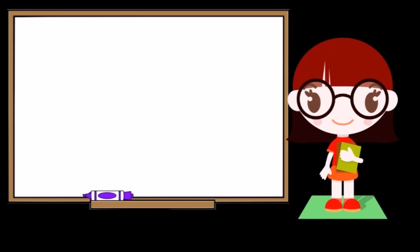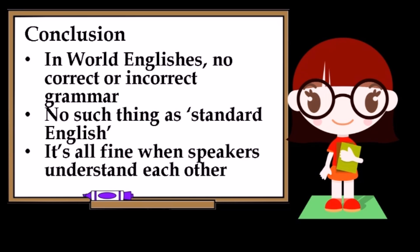All in all, in sociolinguistics, specifically World Englishes, there are no correct or incorrect English, nor is there a standard English. What matters is that speakers of World Englishes can understand each other when they are communicating.